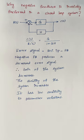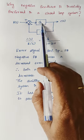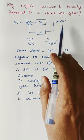Hello viewers, today we are going to discuss why negative feedback is mostly preferred in a closed loop system. This is our closed loop system: G is the gain, H is the feedback, R(S) is the reference input, and C(S) is the output.